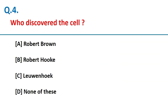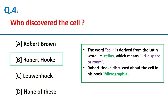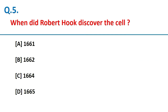The cell was discovered by Robert Hooke. The word 'cell' is derived from the Latin word 'cellus,' which means 'little room.' Robert Hooke discussed the cell in his book Micrographia. He discovered the cell in 1665.